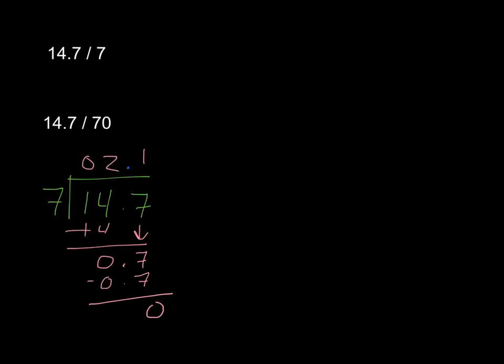After you solve the first one, see if you can reason the second one before you solve it. When I solve 14 and 7 tenths divided by 7, I find my quotient is 2 and 1 tenth. Again, make sure that you've included that decimal.